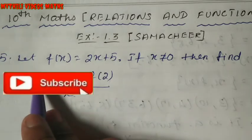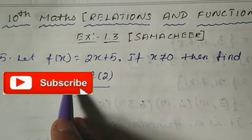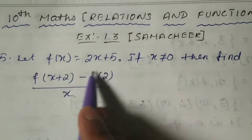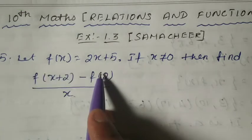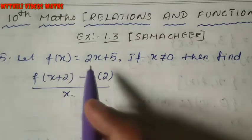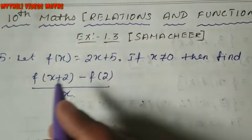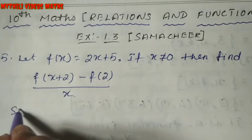So what we are going to do is find f(x+2) separately, find f(2) separately, and then substitute them into the expression. They have given the main function, so from the main function we have to find f(x+2).